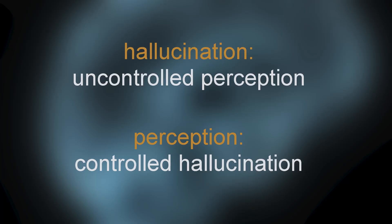The general slogan that comes out of all this is that hallucination is a kind of uncontrolled perception where the brain's expectations are not reined in by sensory data, whereas perception is a kind of controlled hallucination where the brain's best guesses are reined in by sensory data.